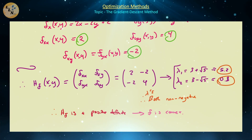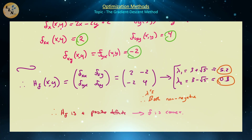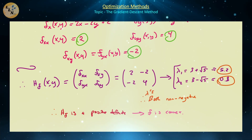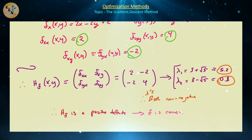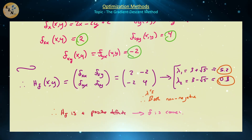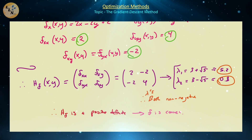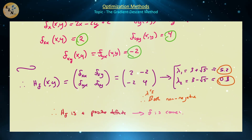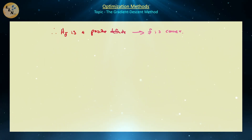It's important to keep in mind what convex means from the optimization perspective: when the function is convex, it has a unique minimum value. The gradient descent method — emphasis on descent — is used to find minimum values of unconstrained functions. If you have a maximization problem and want to use gradient descent, you must take the negative of that function and turn it into a minimization problem instead.